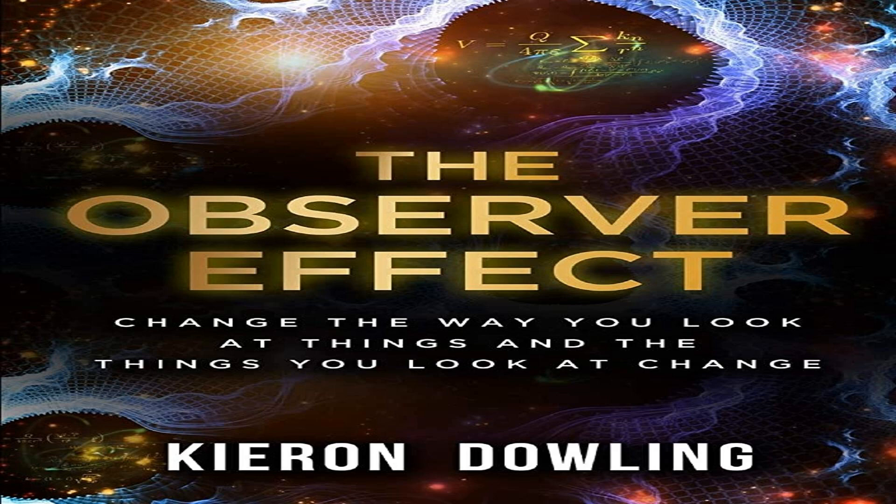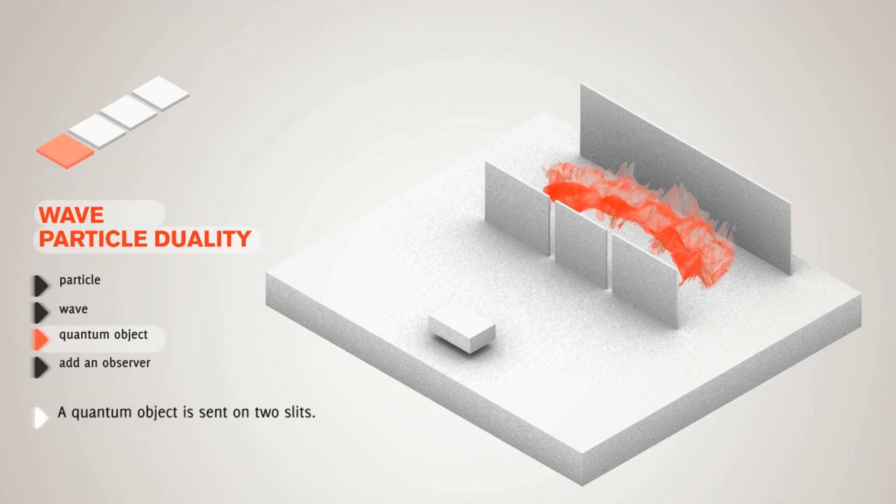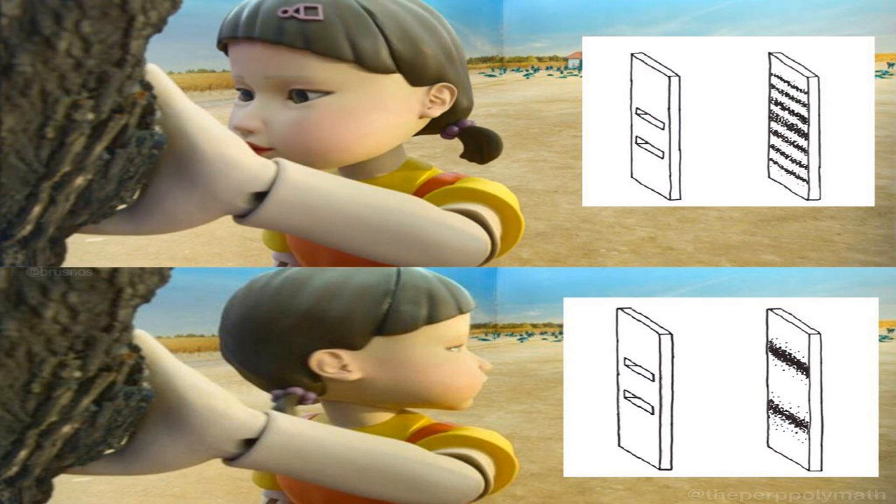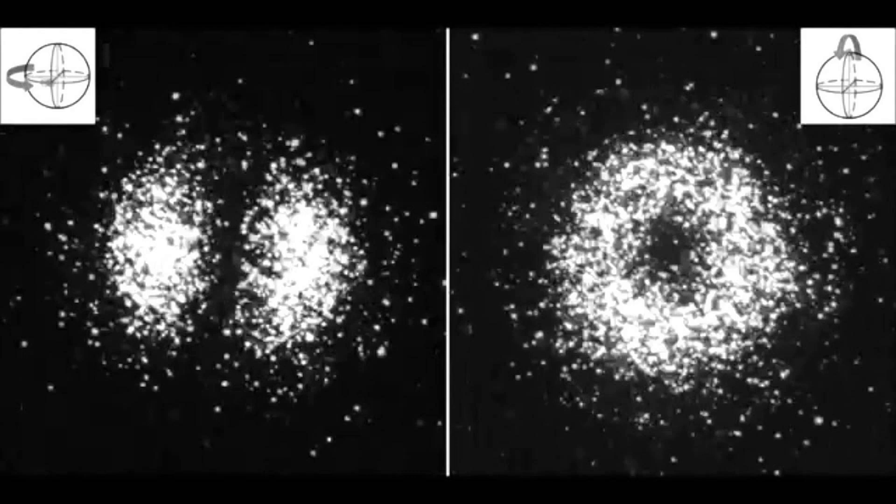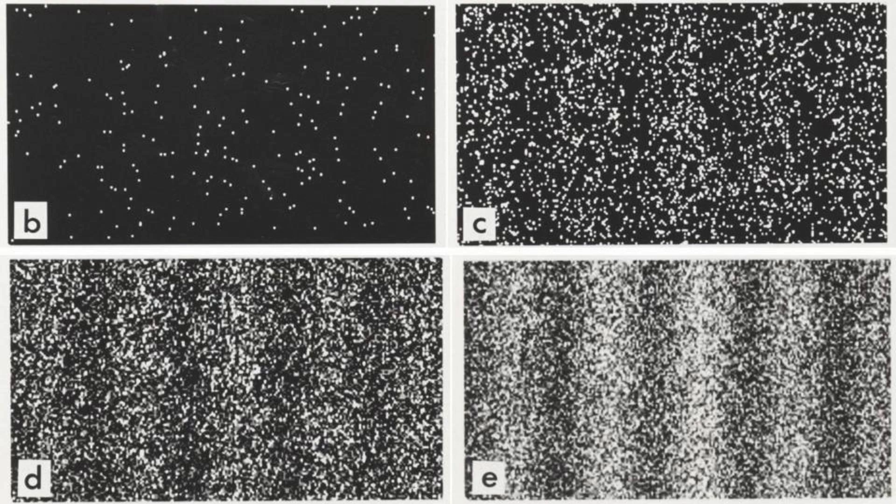The implications of wave-particle duality are truly mind-boggling. It means that the observer has a fundamental effect on the behavior of particles. In fact, some theorists propose that particles don't even have a definite location or momentum until they are observed. This idea has been reinforced through experiments such as the delayed choice experiment. In this experiment, the observer's decision about whether or not to observe a particle affected whether the particle behaved like a wave or a particle. This opens up a series of philosophical and metaphysical questions about the nature of reality, the role of the observer, and the limits of scientific inquiry.